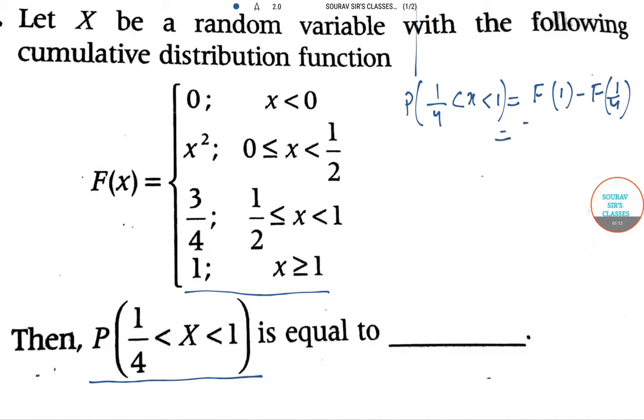For F(1/4), since 1/4 is lying somewhere between 0 and 1/2, we are going to take the function x squared at 1/4, so it will be (1/4) squared.